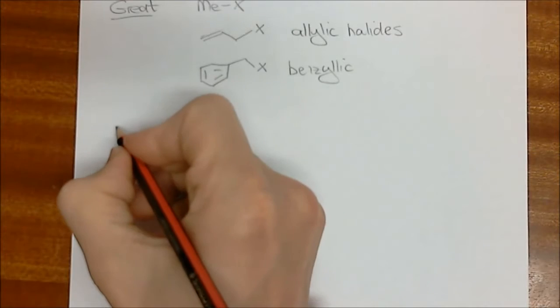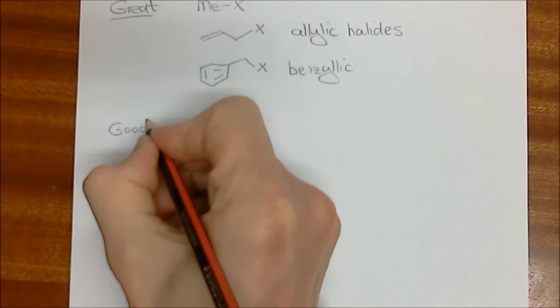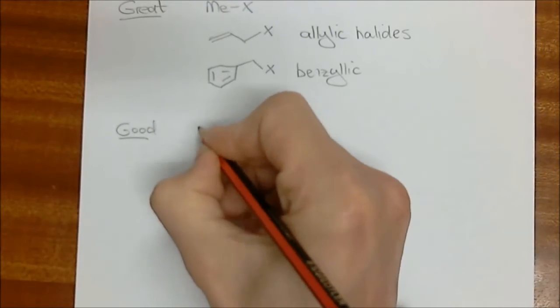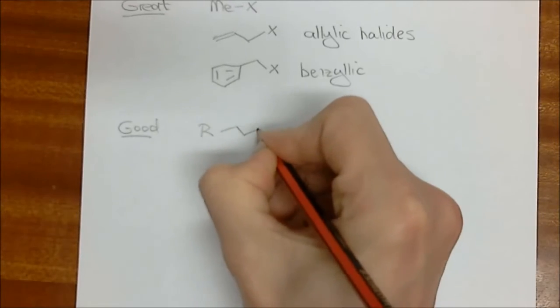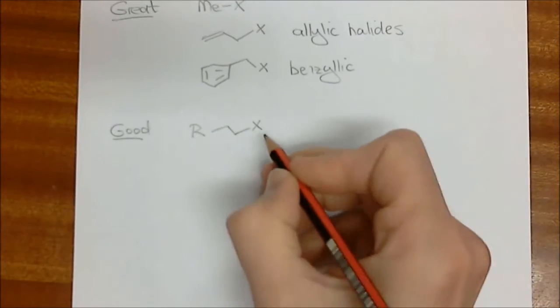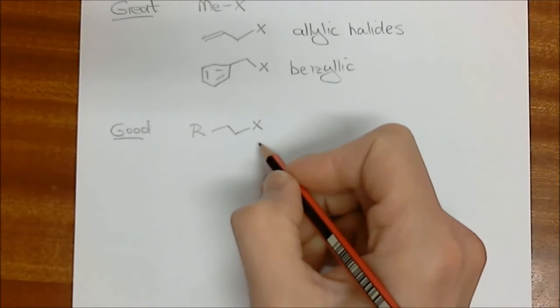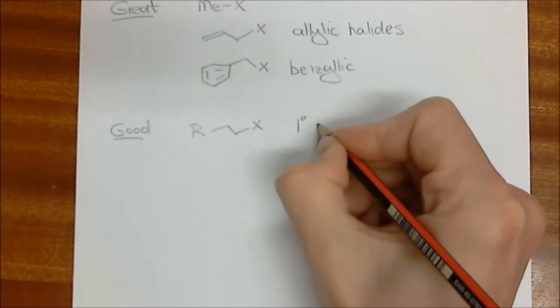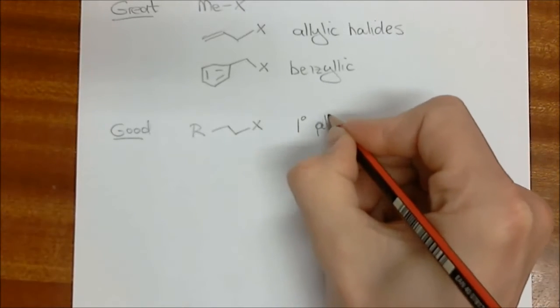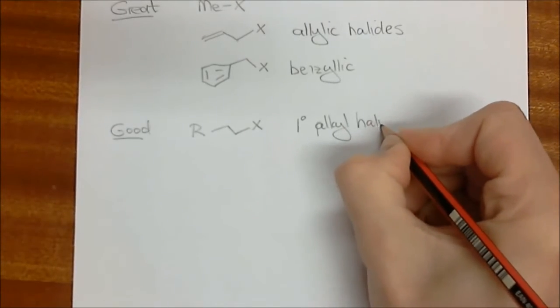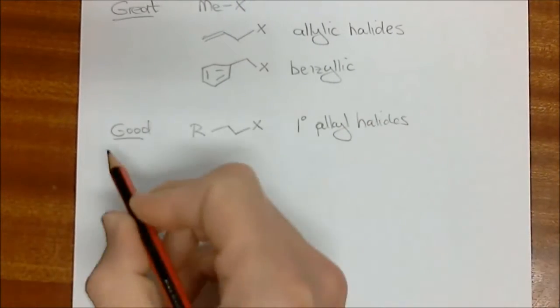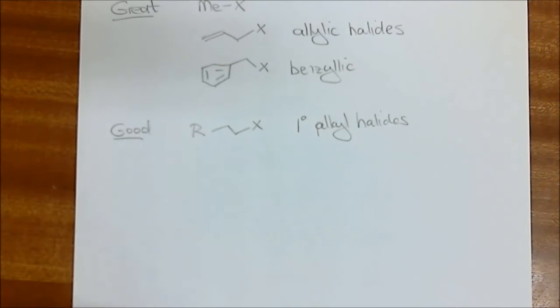Moving on, we have good alkylating agents, and these are just your primary alkyl halides. So something that looks like this, or whatever leaving group might be there. So we're looking at primary alkyl halides are good alkylating agents for enolates.